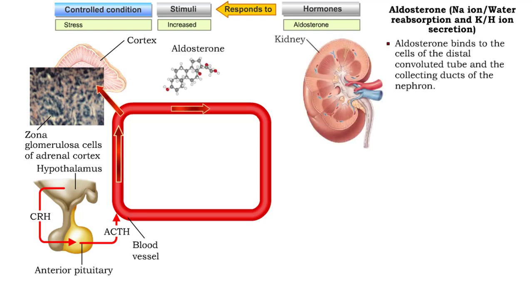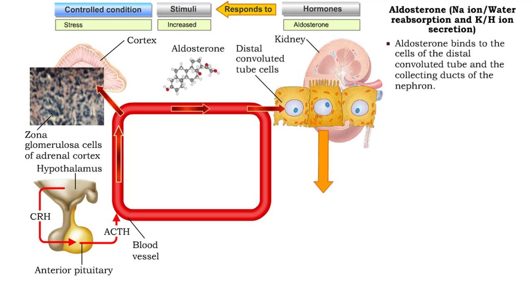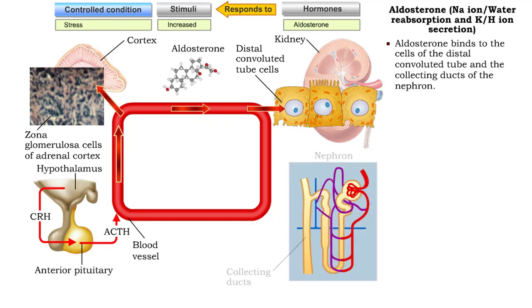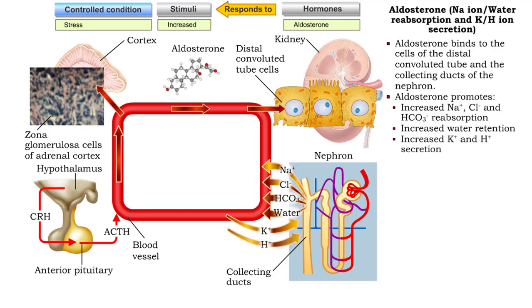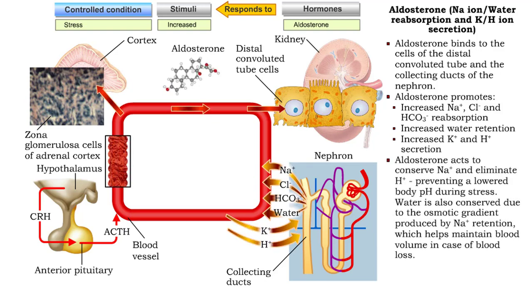Aldosterone binds to the cells of the distal convoluted tube and collecting ducts of the nephron, where it promotes increased sodium, chlorine, and hydrogen carbonate reabsorption from urine, increased water retention and reabsorption back into the bloodstream, and increased potassium and hydrogen secretion. The conservation of sodium and elimination of hydrogen prevents a lowered body pH during stress. In addition, water is conserved due to the osmotic gradient produced by sodium retention, which helps maintain blood volume in case of blood loss.